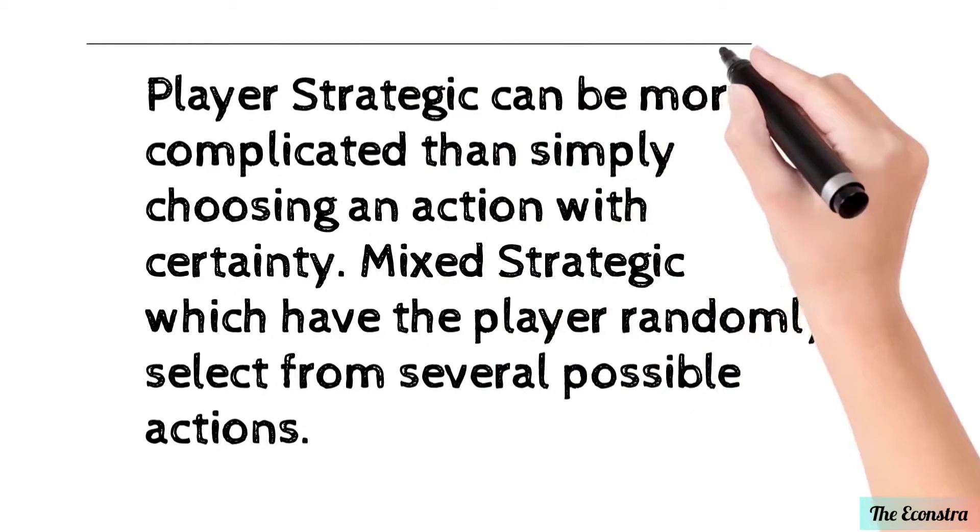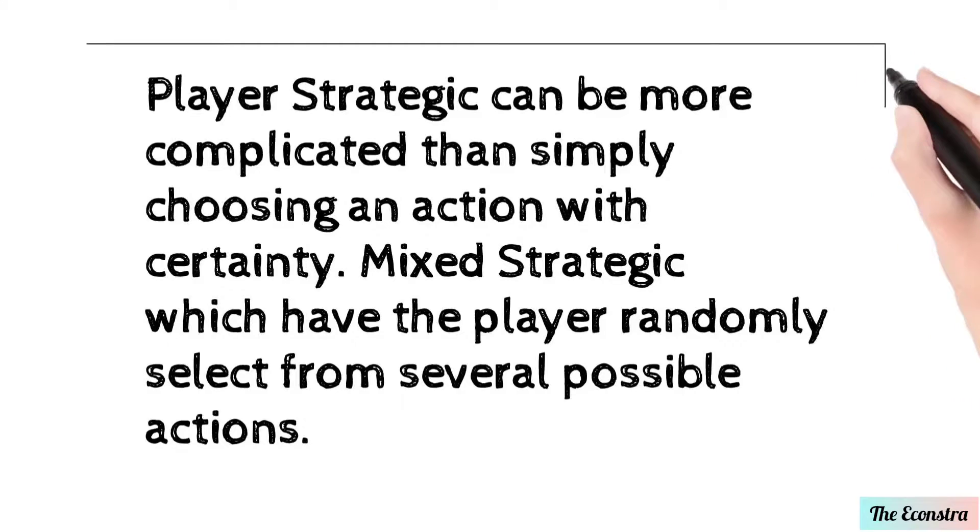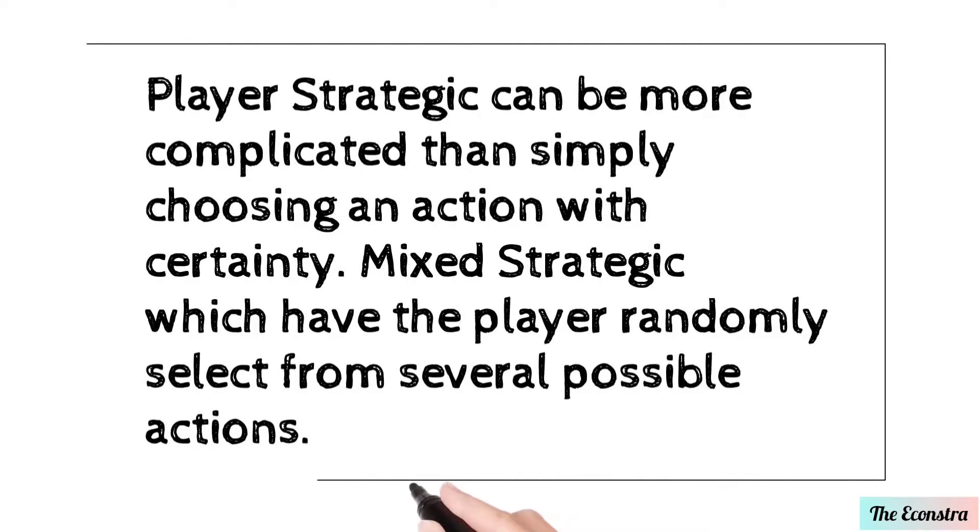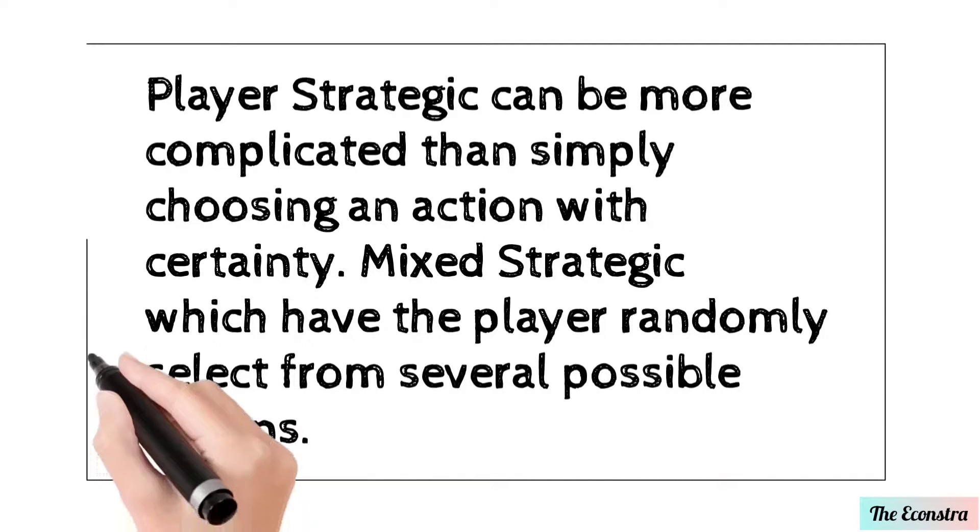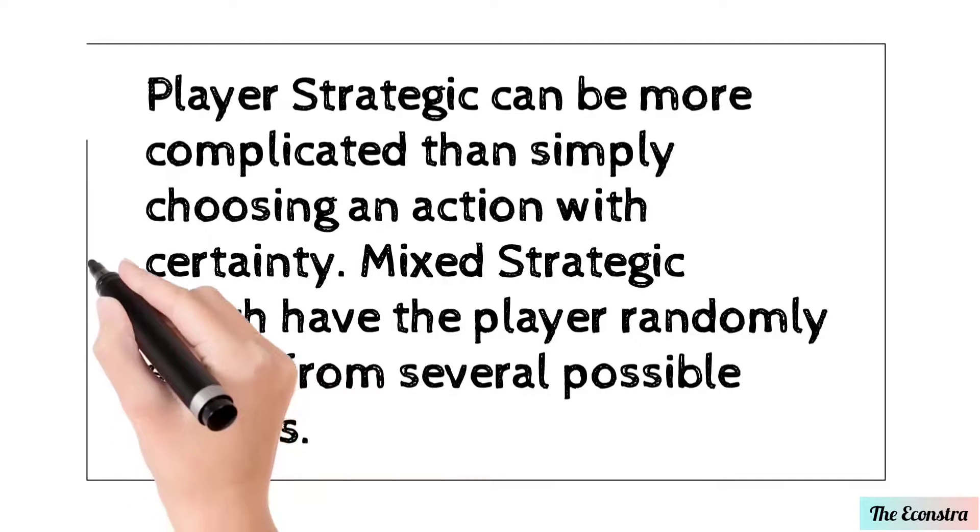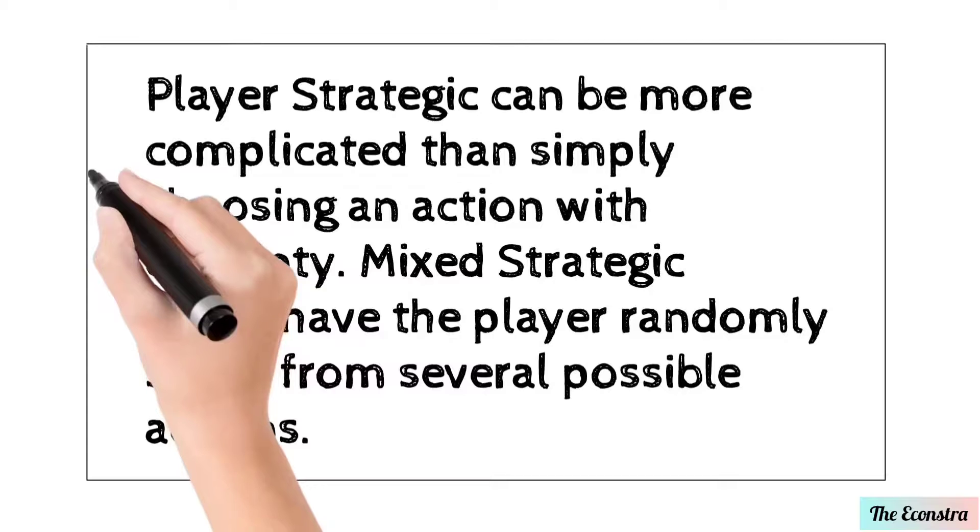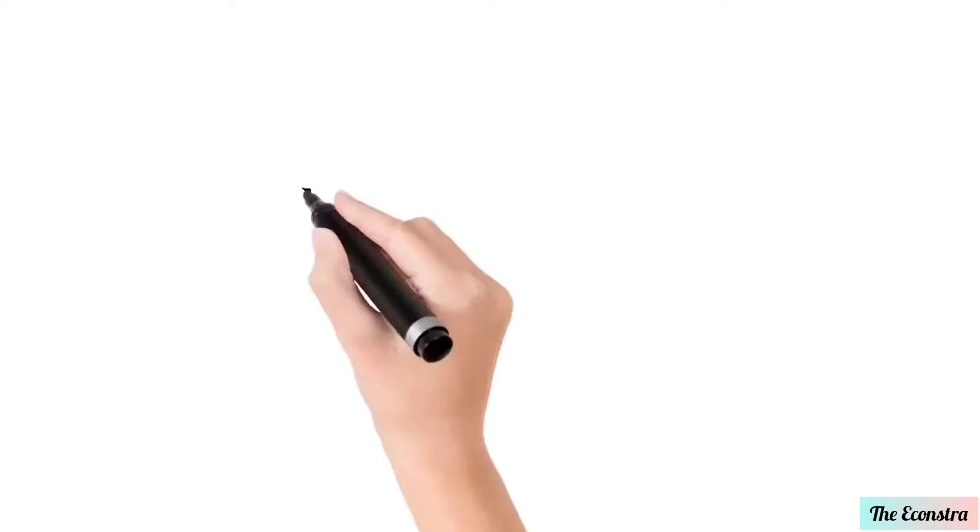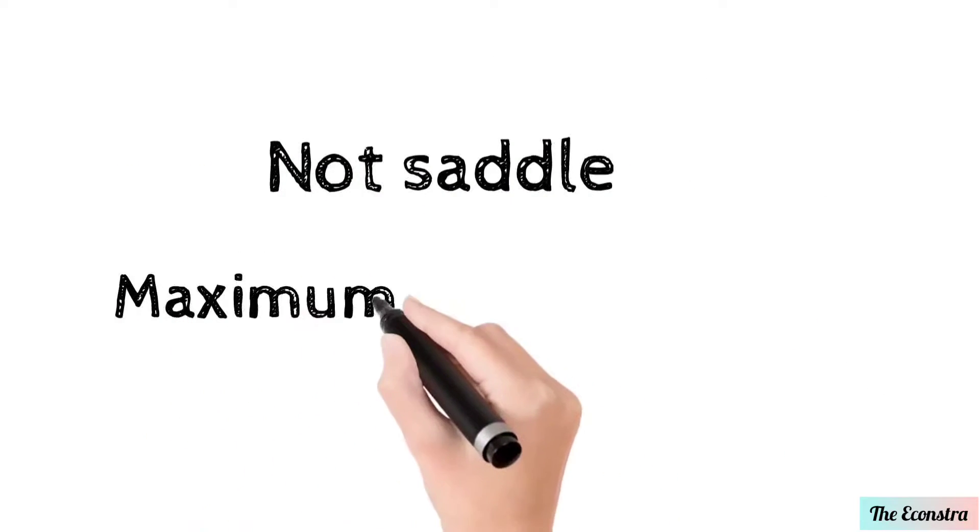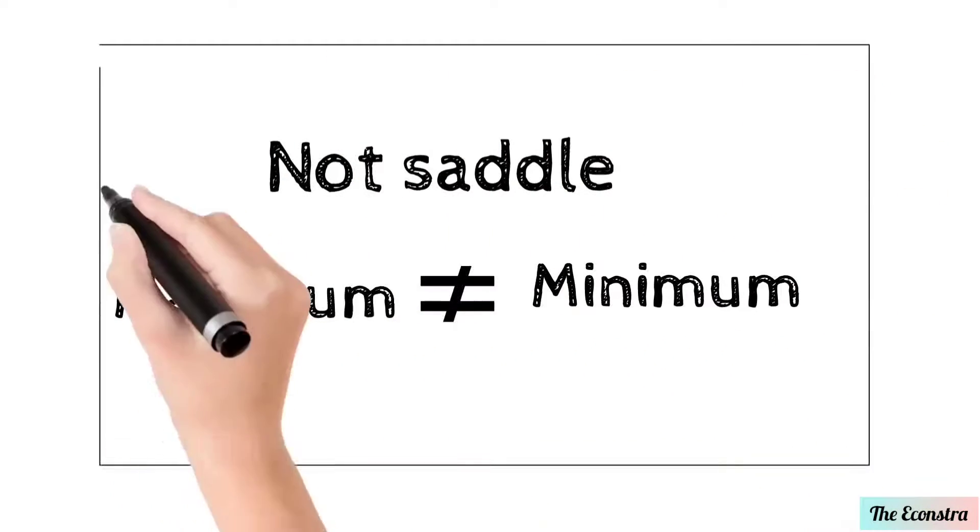In this strategy, the player can be more complicated than a simple action with certainty. That means the player can use more than one strategy, and here the complication creates subtlety. A mixed strategy is basically used for randomly selecting strategy which creates several possible actions. Here the meaning of not subtle is maximum is not equal to minimum.